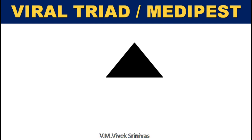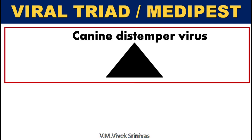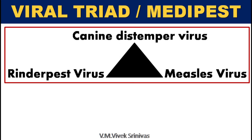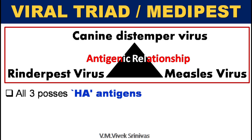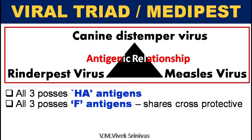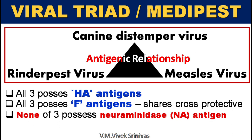The three viruses under the genus Morbillivirus — canine distemper virus, rinderpest virus, and measles virus — share a common antigenic property. All three viruses possess hemagglutinin antigen. Similarly, all three viruses possess fusion antigens which share cross-protectivity. And none of the three viruses possess neuraminidase protein. These three viruses sharing a common antigenic property are termed as the viral triad, or medi-pest.